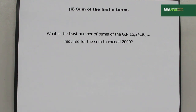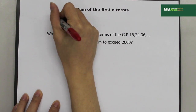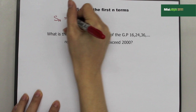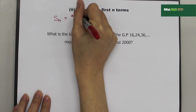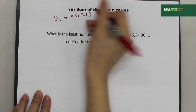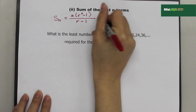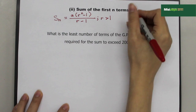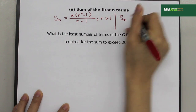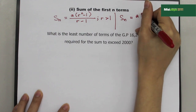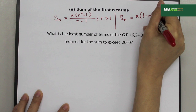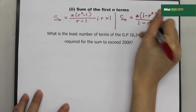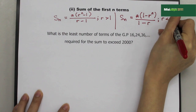The next formula for GP is the sum of the first N terms. When R is more than 1: SN equals A times bracket R to the power N minus 1, all over R minus 1. When R is less than 1: SN equals A times bracket 1 minus R to the power N, over 1 minus R.